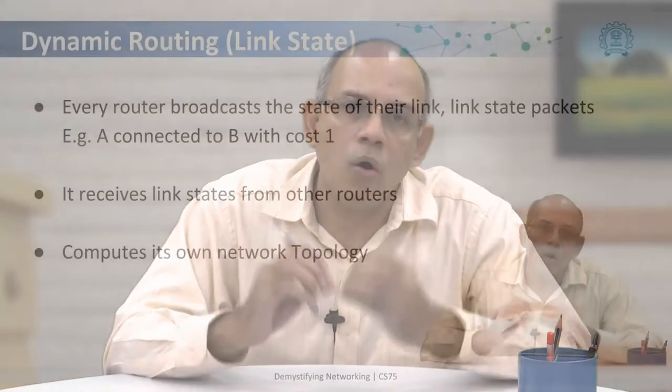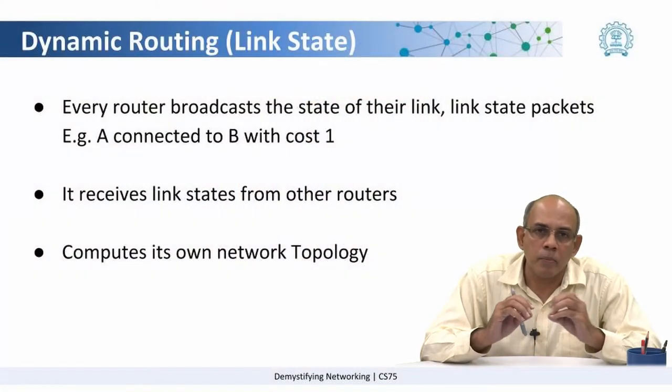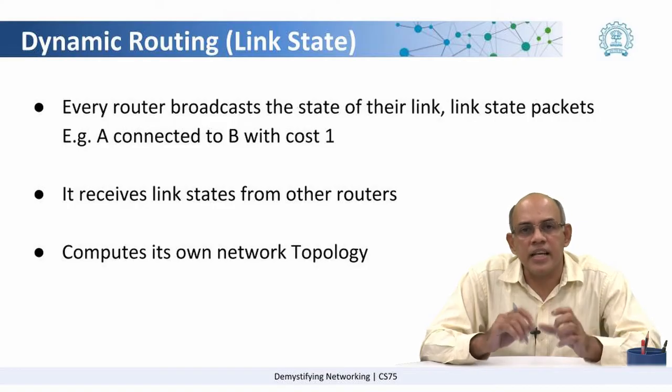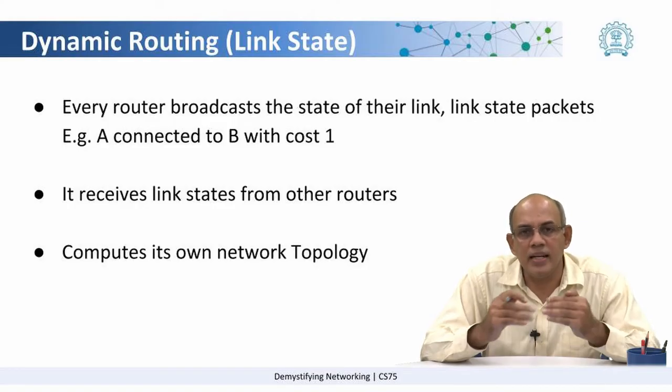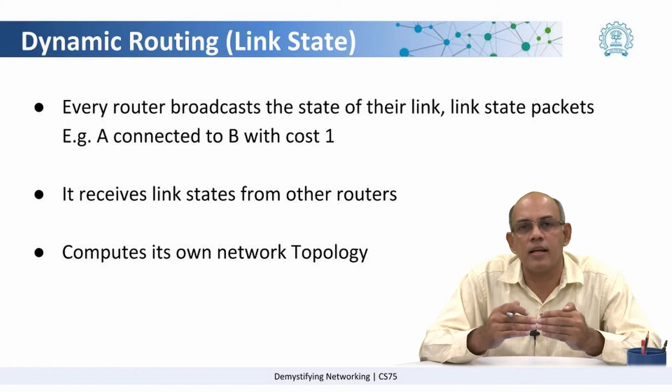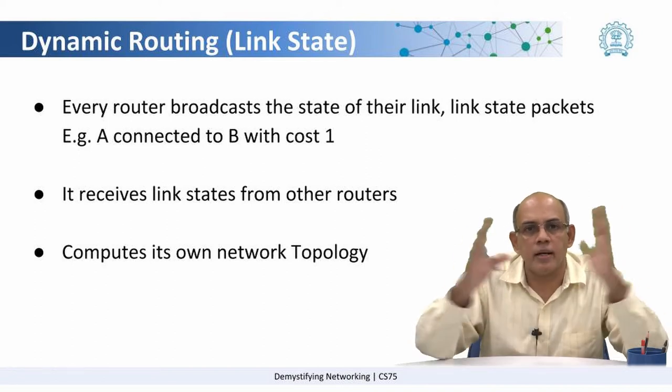Having seen how the distance vector algorithm works, let us now move on to another important concept: link state routing. This is a different idea, and the key point is that instead of exchanging routing tables that keep getting bigger and bigger as they progress through the network, every router broadcasts the state of its links. These link state packets are propagated all through the network.